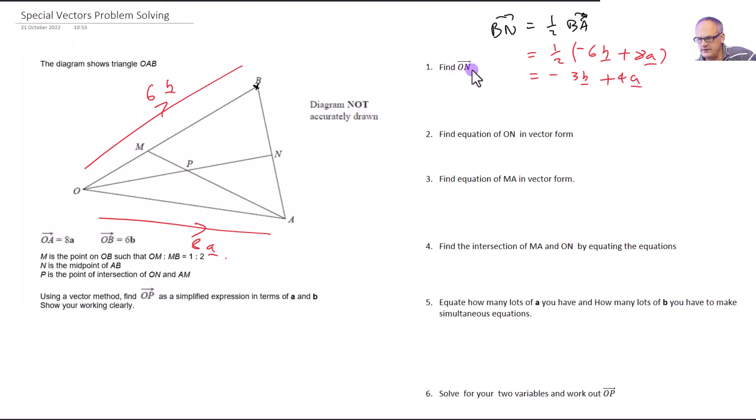Now we want to find ON because we only found BN, and that's going to be equal to OB which is 6B plus BN. We've already got BN. So ON will equal 6B plus BN which is minus 3B plus 4A, which comes out to be 3B plus 4A.